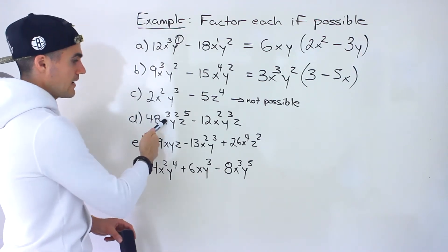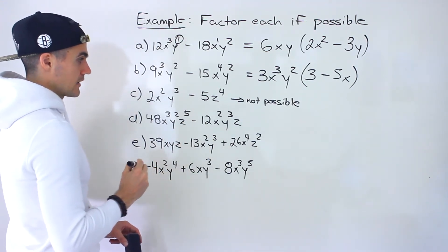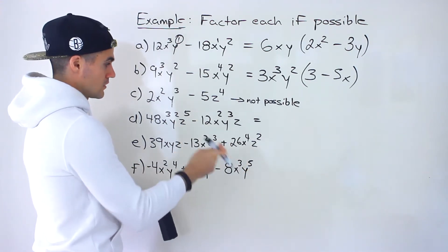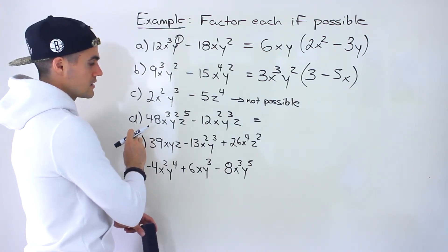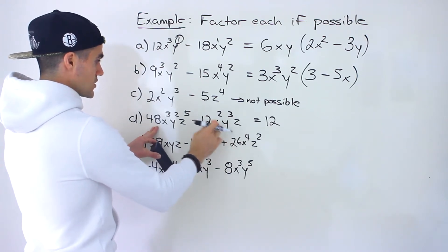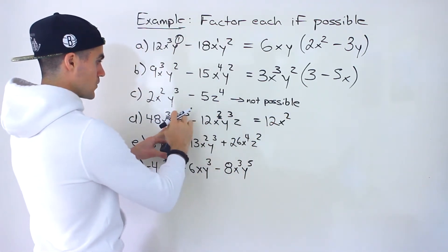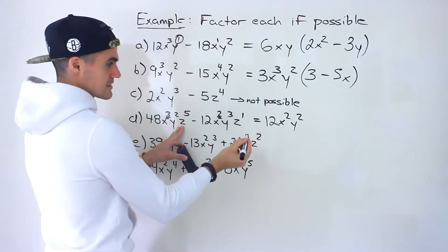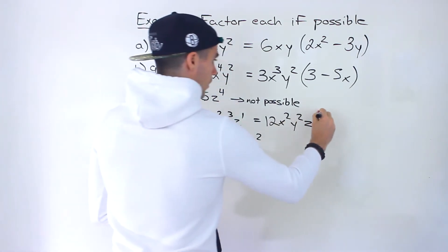Moving on to part D: 48x³y²z⁵ minus 12x²y³z. Starting with the integers 48 and 12 — the greatest common factor is 12. 12 goes into 48 four times, and 12 divided by 12 is 1. For x, both expressions have it and the lowest exponent is 2, so we take out x squared. For y, the exponents are 2 and 3 — lowest is 2, so we take y squared. For z, the exponents are 5 and 1 — lowest is 1, so we take out z.